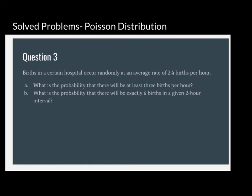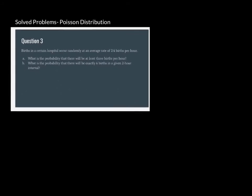In this video, I'm going to teach you how to solve a Poisson distribution problem. Births in a certain hospital occur randomly at an average rate of 2.4 births per hour. Although it is not stated here, let us assume that the distribution is a Poisson distribution. Letter A: what is the probability that there will be at least three births per hour? And letter B: what is the probability that there will be exactly six births in a given two-hour interval?